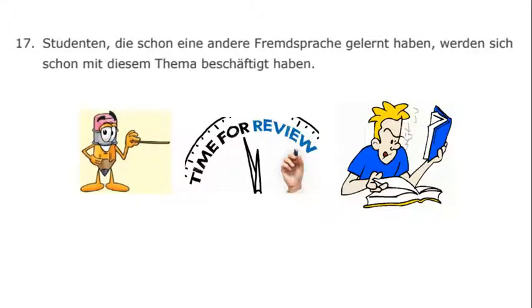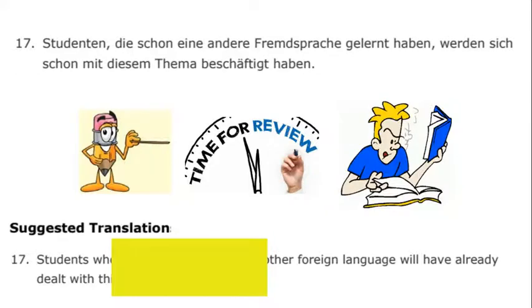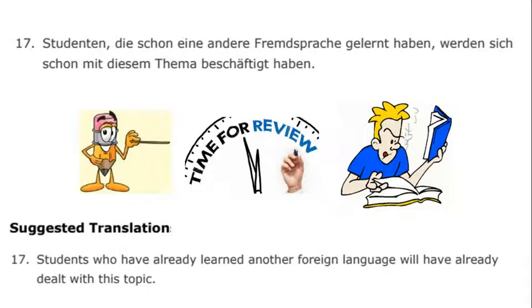Moving on to the 17th sentence. We'll compare translations in just a moment. Where exactly is the conjugated main verb? We find it after the second comma: Studenten and then werden. And then we have haben at the end of this whole sentence — giving us something about the future: will have. So from this much information we're talking about students who will have done something.